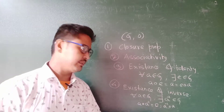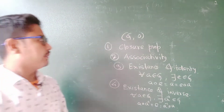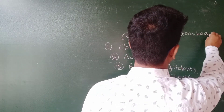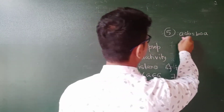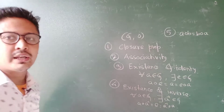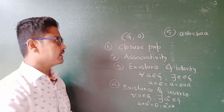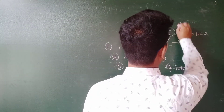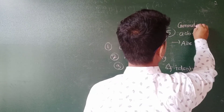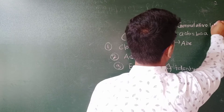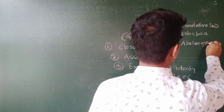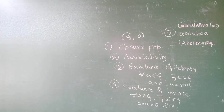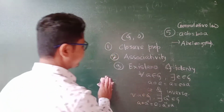Number four: existence of inverse. So the commutative property — a dot b equal to b dot a. That means with respect to the binary operation, if it follows this rule — that is a dot b equal to b dot a for all elements belonging to the group Z — then we say that this algebraic structure is a group, and also it is an abelian group. It is commutative. Abelian.